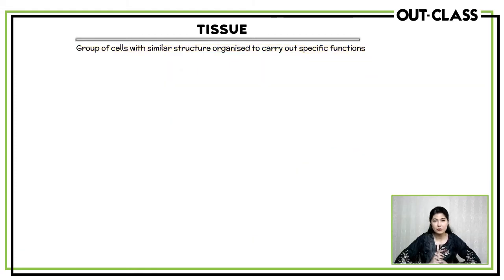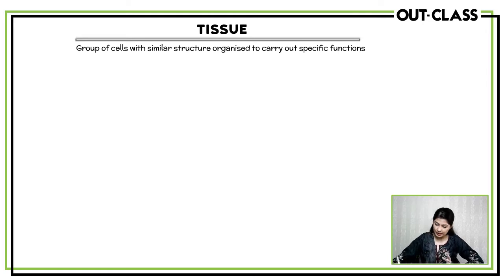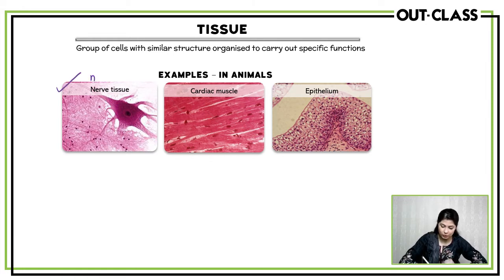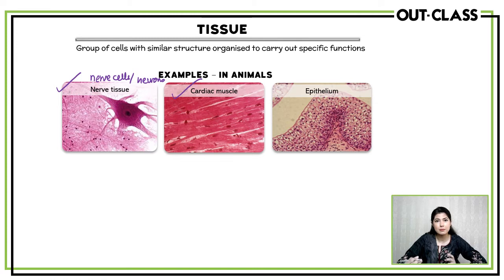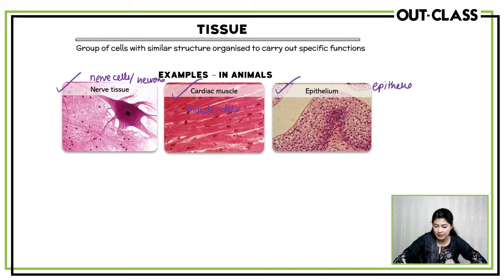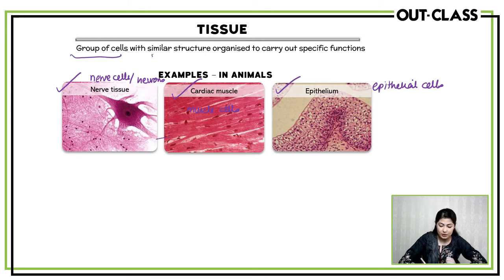What are some examples of tissues in animals? First, you have nerve tissue, which is made of nerve cells also known as neurons. Then you have cardiac muscle tissue, which is made of muscle cells. Then you have epithelium, which is made of epithelial cells. All of these tissues are made up of only one type of cell, and they are groups of cells with a similar structure which carry out specific functions.